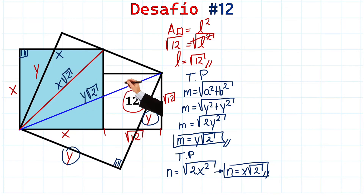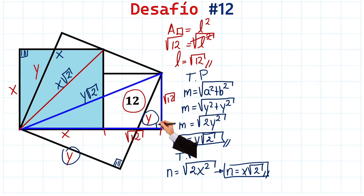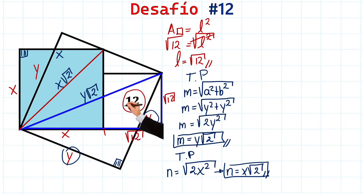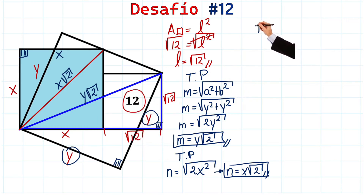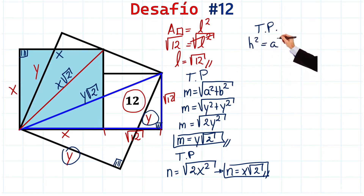Now pay close attention to this blue triangle that's going to appear right now. This is a right triangle, because there are 90 degrees here, and we can use the Pythagorean theorem to see what happens. We're using the extremely powerful Pythagorean theorem for the third time, saying the hypotenuse squared is equal to one leg squared plus the other leg squared.